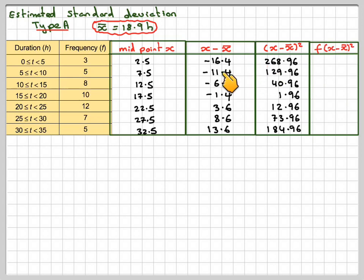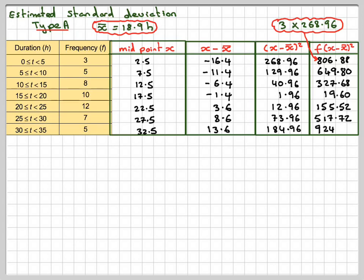So this one happens three times, we have to now do three times this, five times 129.96. Then so on down that column: eight times 40.96, and then so on. If we add them all up they get 50 there, and we're interested in this.